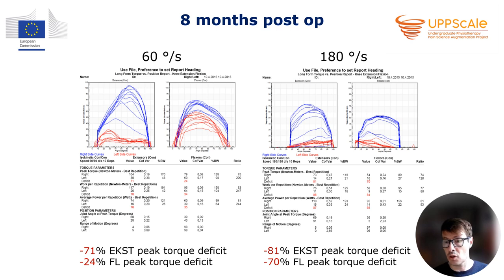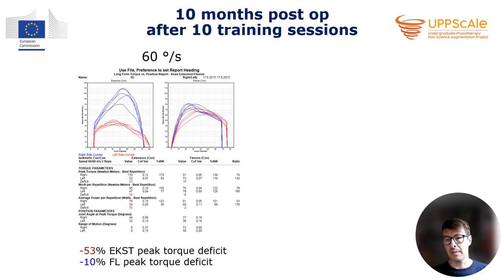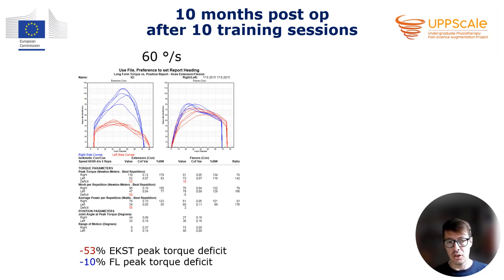At that point we started a short disinhibitory program of 10 training sessions. Two months and 10 training sessions later, she improved her knee muscle strength. But there was still quite a bit of deficit in the extensor muscles — you can see much nicer torque curves, but still a large difference between injured and non-injured side: still 53% peak torque deficit of the extensors. However, the flexors fully recovered — they became even stronger, although this was her non-dominant leg.